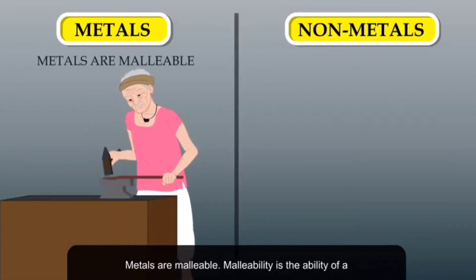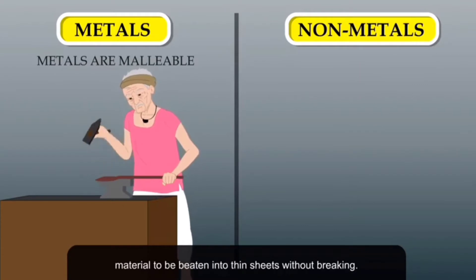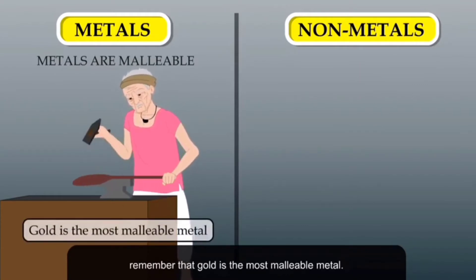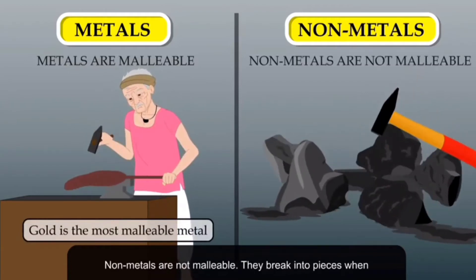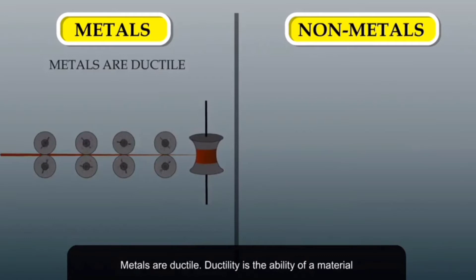Metals are malleable. Malleability is the ability of a material to be beaten into thin sheets without breaking. Remember that gold is the most malleable metal. Non-metals are not malleable; they break into pieces when beaten with a hammer.